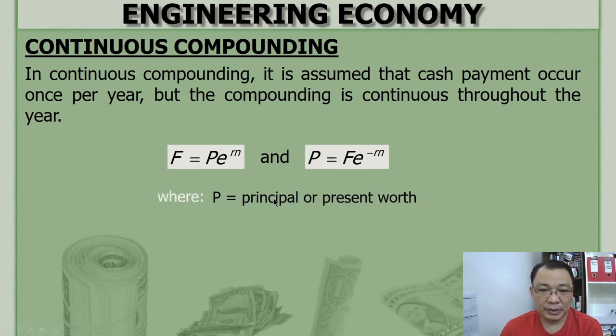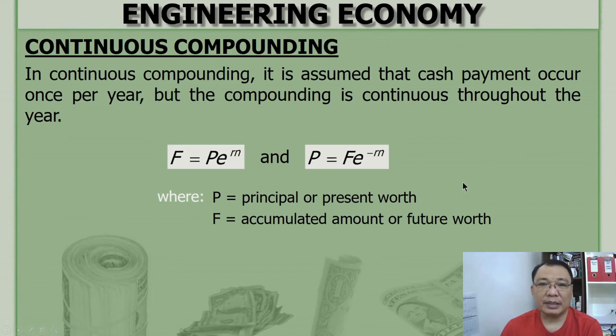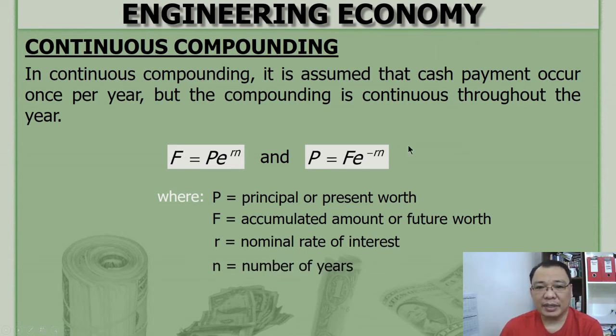Where P is principal or present worth, F is accumulated amount or future worth, r is the nominal rate of interest, and n is number of years. Although ideally there is number of interest periods, number of years.